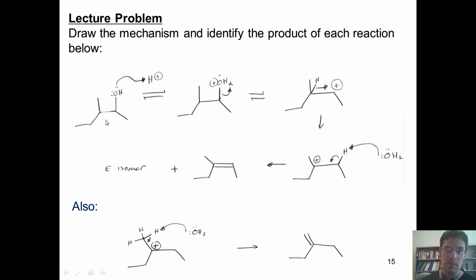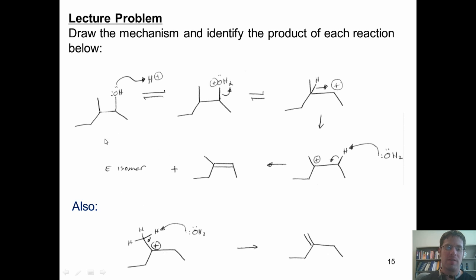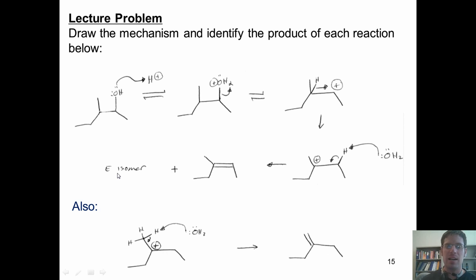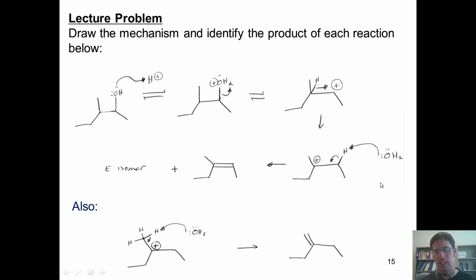So this dehydration reaction forms potentially three products: this product here, this product here, and the E-isomer which I have not drawn. By Zaitsev's rule, the two products that will be most favored are the alkenes that are more carbon-substituted. Between those two, the E-isomer will be the more stable. Notice that a dehydration reaction is really nothing more than an elimination reaction in which the leaving group is an OH.